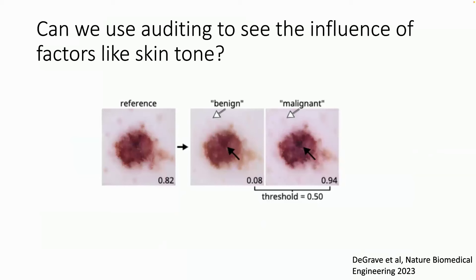In recent work, we built an auditing system to see what factors influence the decision-making process of AI models, using generative adversarial neural networks. We started with a reference image and tested several models — some research models, some commercial apps from the app store. We trained a separate model that made adjustments to the reference image, creating counterfactual images that appeared more benign or more malignant to the medical models being tested.